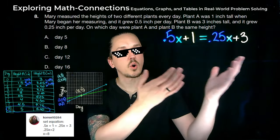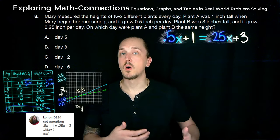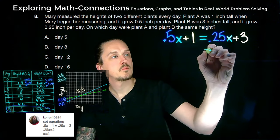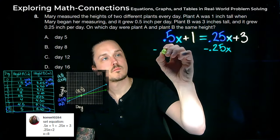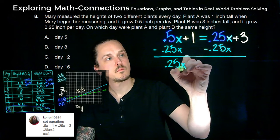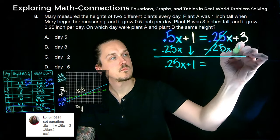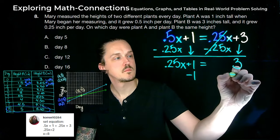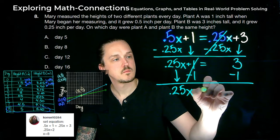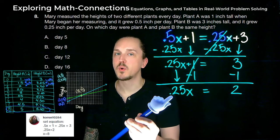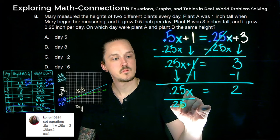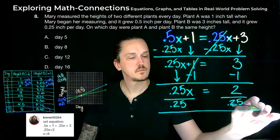Now to solve for x. Starting with the equation Corrin gave us, our goal is to get all terms with x on one side and all the constants on the other side. First, we'll subtract 0.25x from both sides to combine our x terms. This gives us 0.5x minus 0.25x, or 0.25x, on the left side. We'll also subtract 1 from both sides to shift the constant terms. This results in 3 minus 1 on the right side, or 2. This leads us to 0.25x equals 2. Now to solve for x, we will divide both sides by 0.25. This gives us x equals 8.